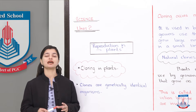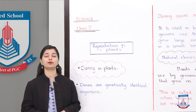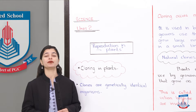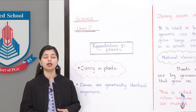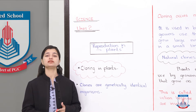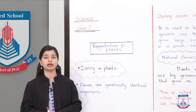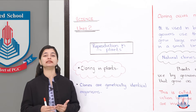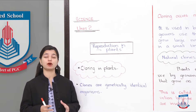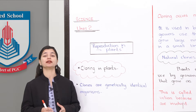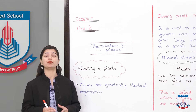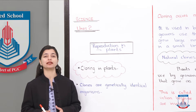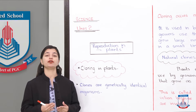Since we have covered many topics in our reproduction chapter, we were constantly talking about sexual reproduction. We talked about fertilization, pollination, and flowering plants, which are sexually reproduced.